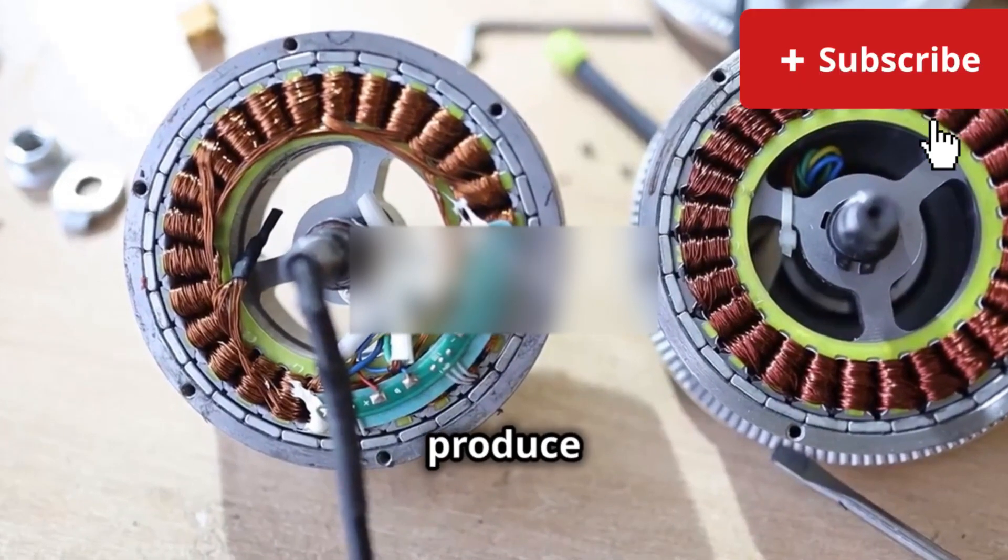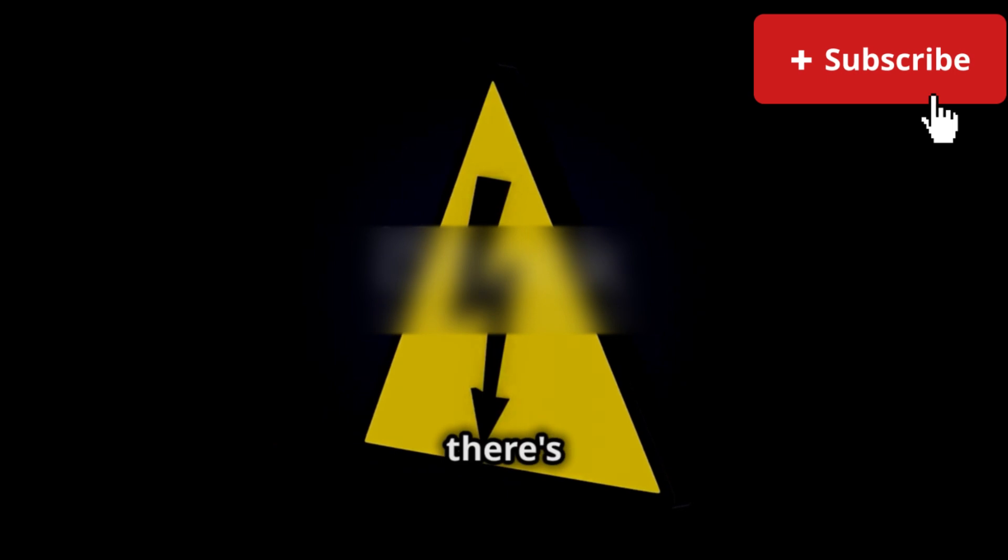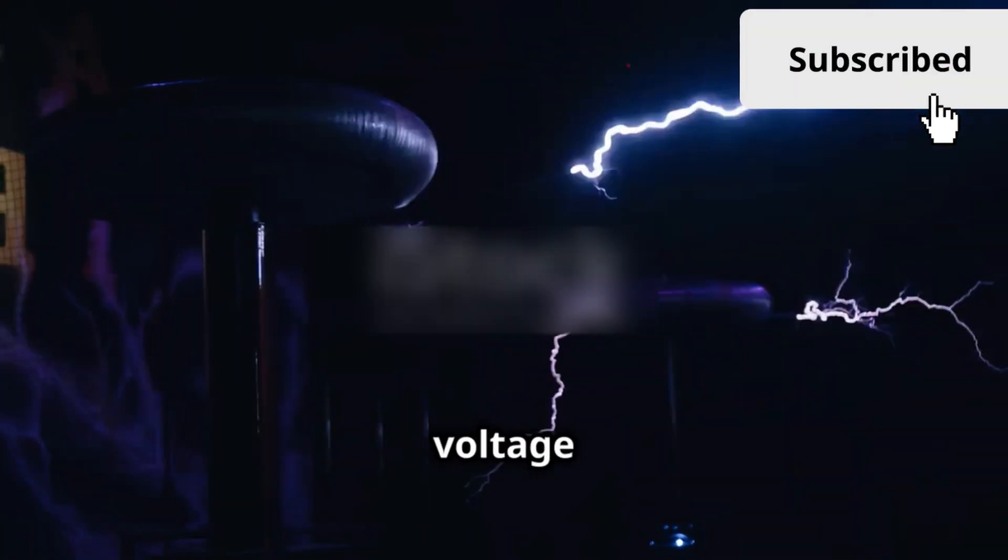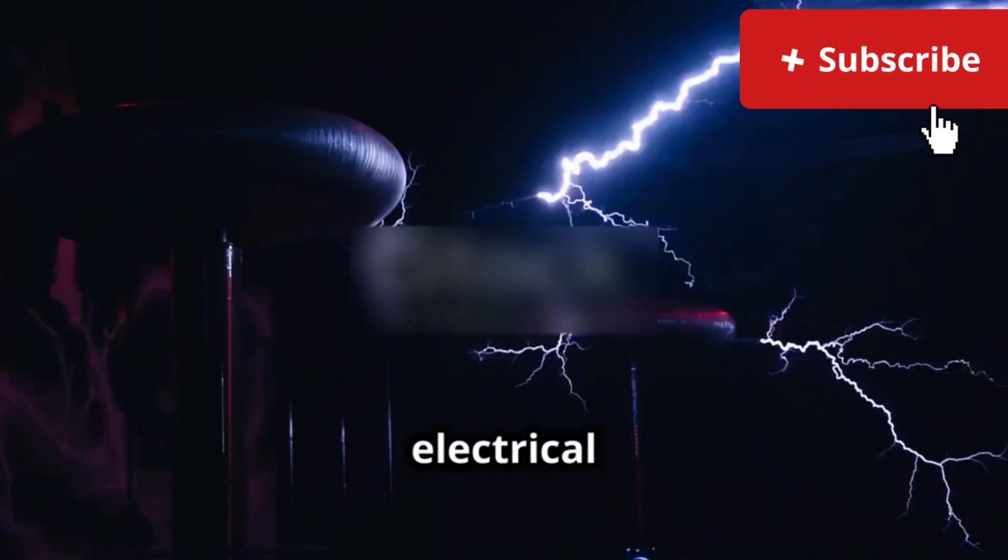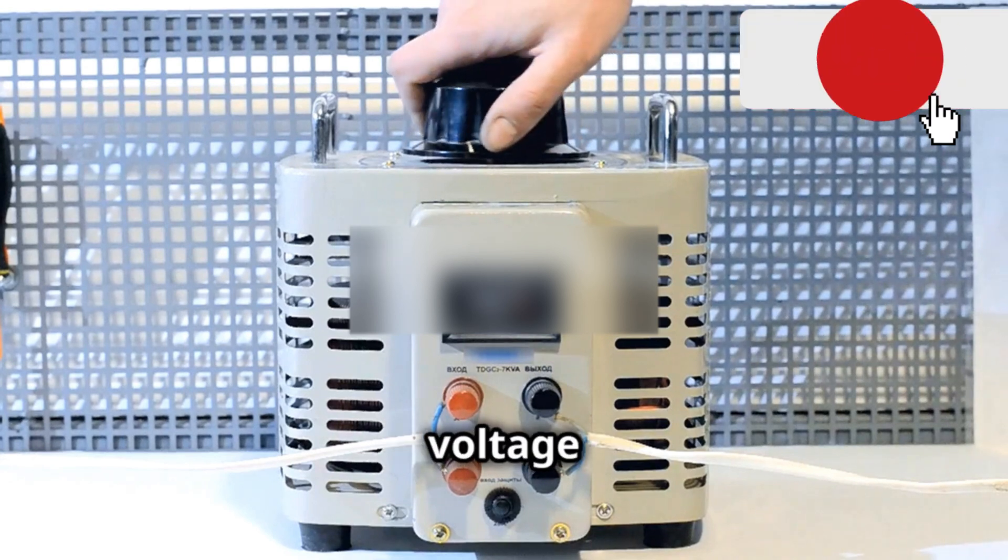In addition to these challenges, there's also the issue of safety. Running a motor at the wrong voltage can create electrical hazards such as sparking or even electrical fires. So it's crucial to understand the implications of voltage changes on DC motors and to operate them within their recommended voltage ranges.